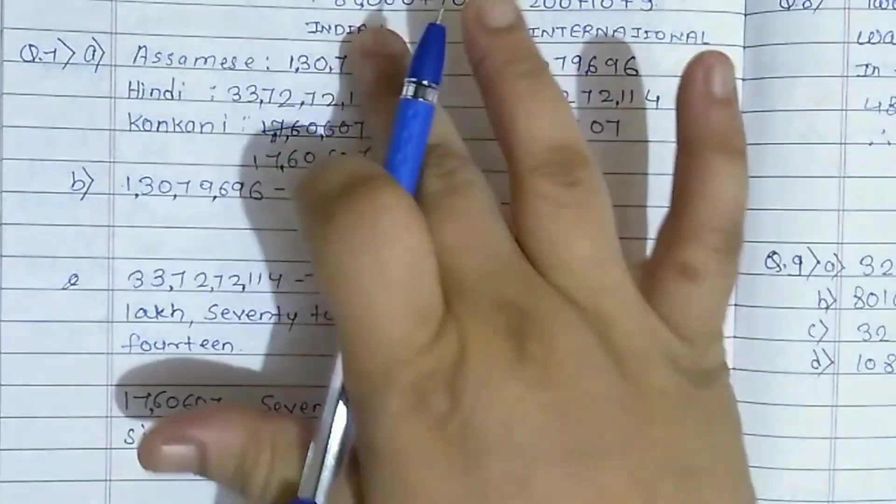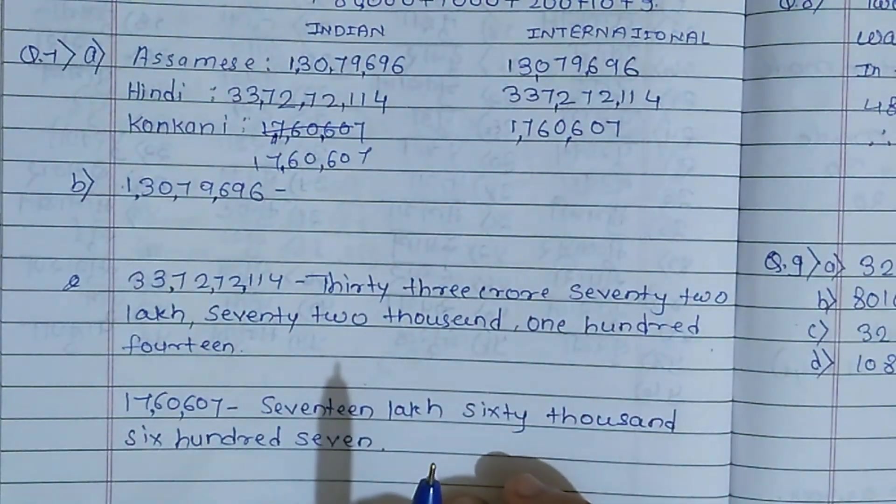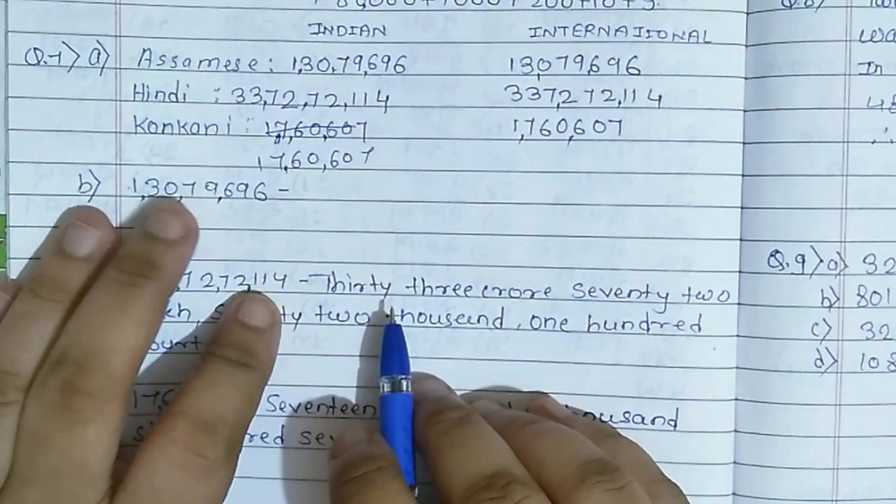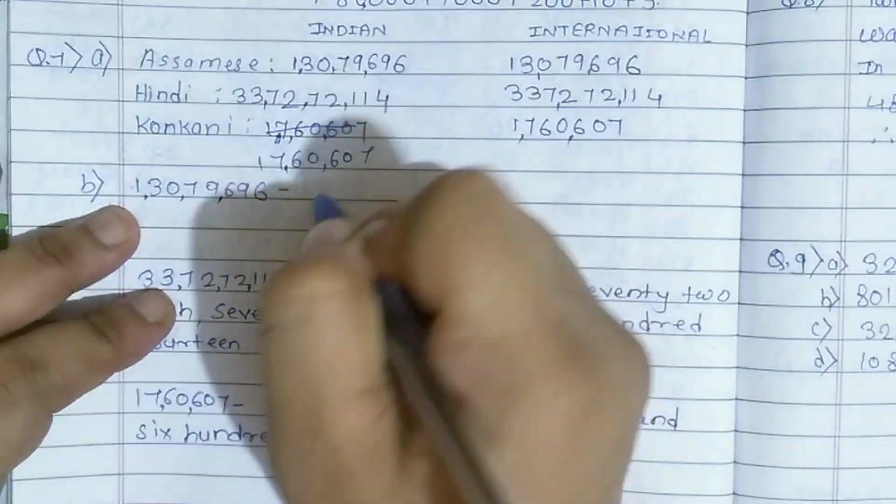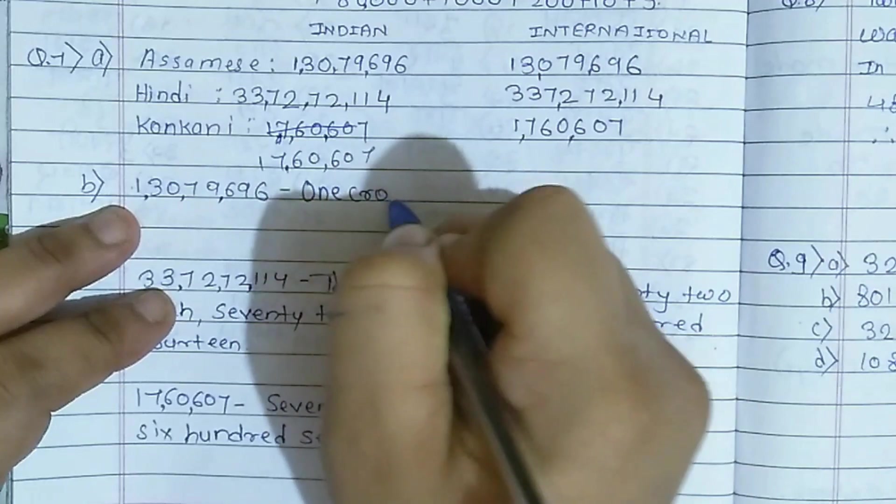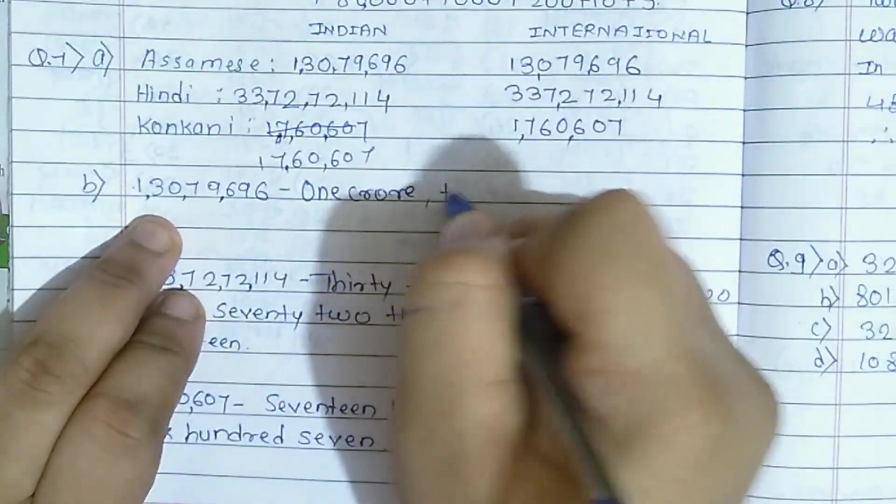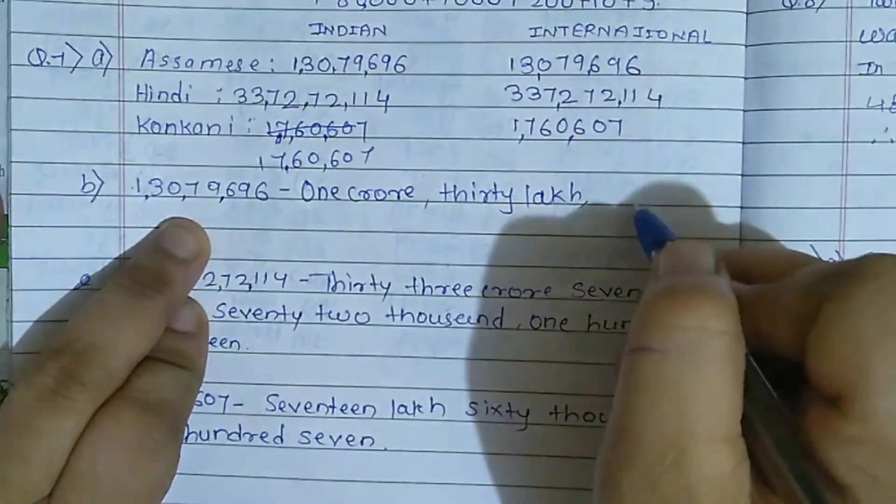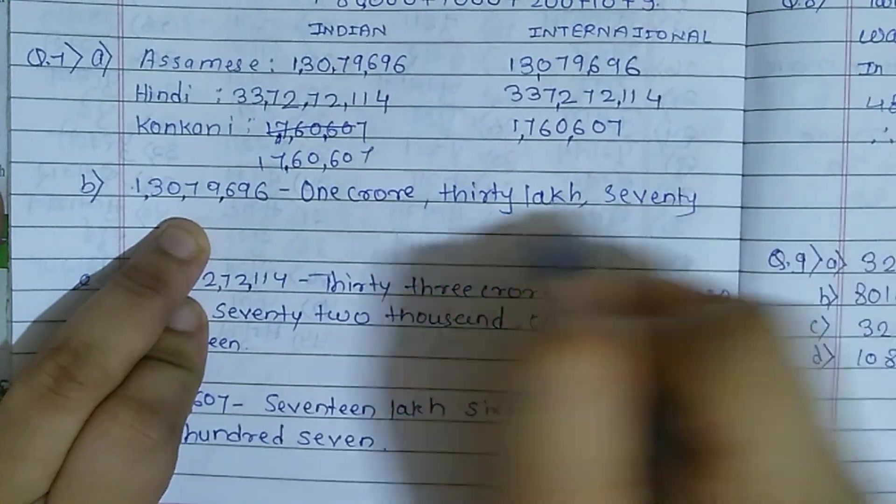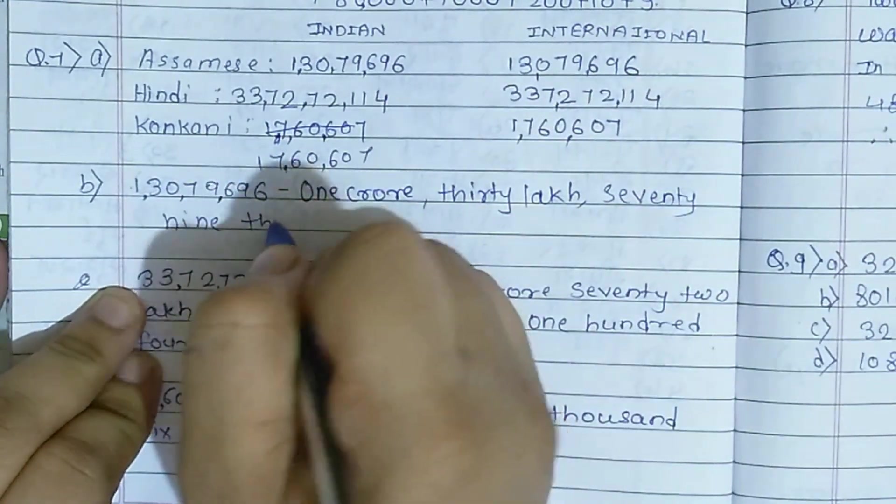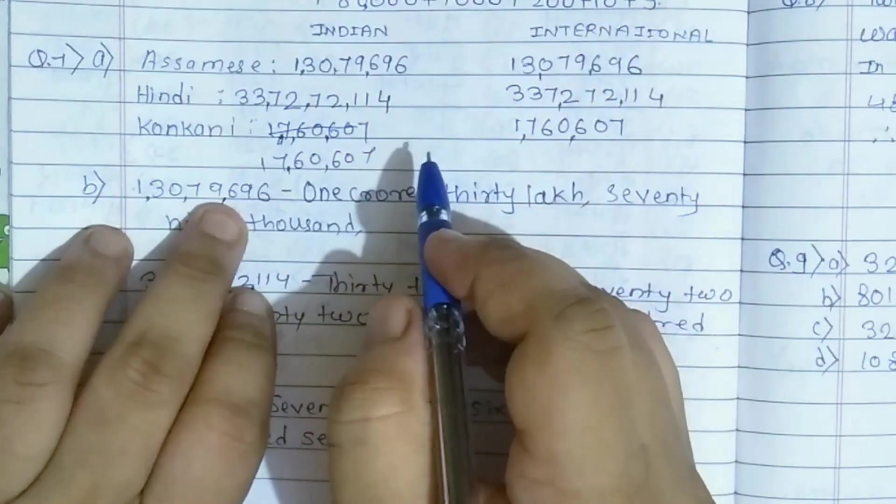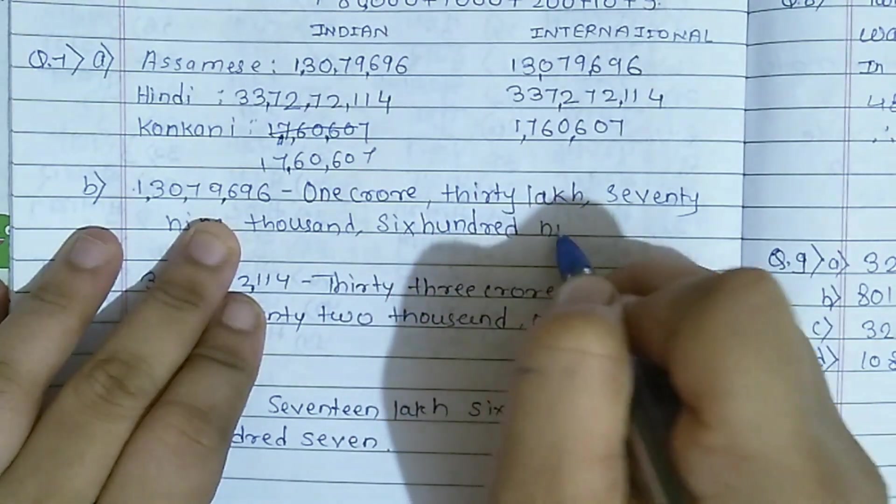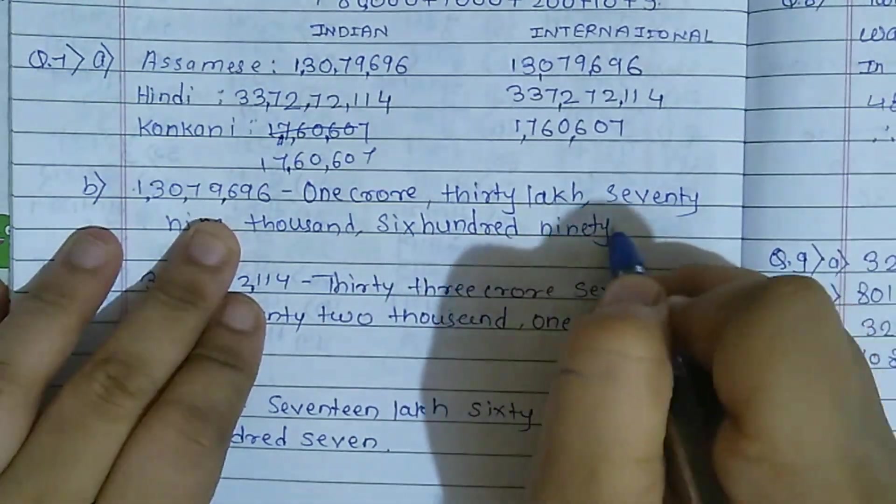Next, part B: same numbers, we have to write them in Indian number system. So see, I have taught you: one, ten, hundred, thousand, ten thousand, lakh, ten lakh, crore. Meaning this will be one crore. So here you have to write the spelling: one crore. Then what will come? 30 lakh. After that what will come? 79 thousand. Next, 696.